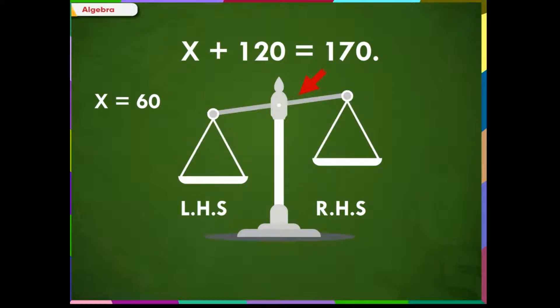If we put 60 in place of x, we see that the left side of the equation becomes greater and thus it does not balance the equation.